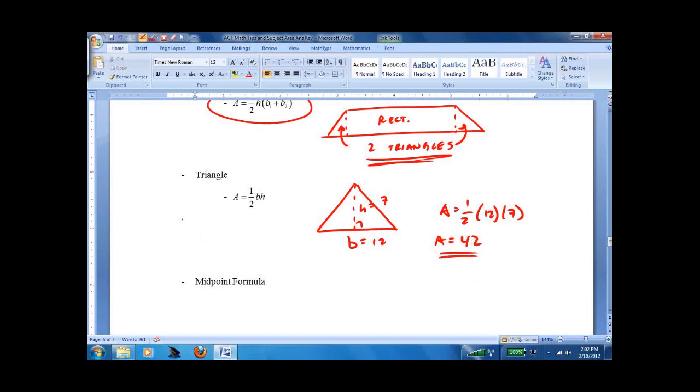But watch out. They often will give you a triangle looks like this. And you need to recognize that the height is a right angle to the base, even if it doesn't look like it's part of the triangle. So this would be area equals 1 half, 4 times 7, which is 14. Very common on the ACT. If you've got any practice problems, I'm sure you'll see one in there like that.